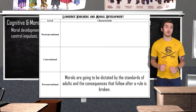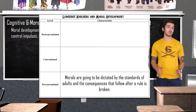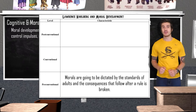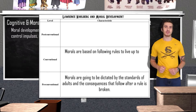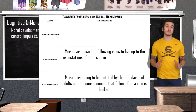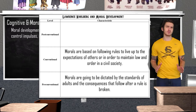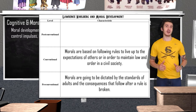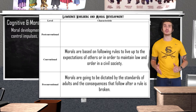Level two, conventional moral reasoning, is where most adolescents and adults reside. In this level we follow rules to live up to the expectations of others and maintain law and order to keep a civilized society. If Heinz were in this stage he might decide not to steal the drug because he does not want to break the law, or on the other hand he might steal it in order to be a good husband.